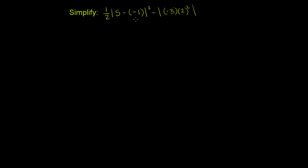Simplify 1 half times the absolute value of 5 minus negative 1 squared minus the absolute value of negative 3 times 2 squared. So this is an order of operations problem with a little bit of absolute value thrown in for good measure.